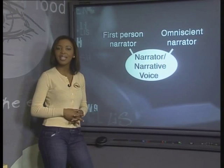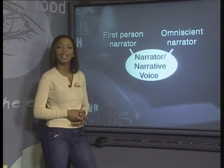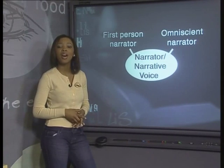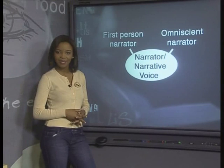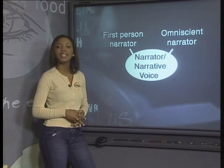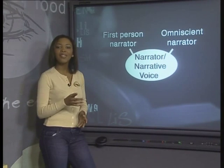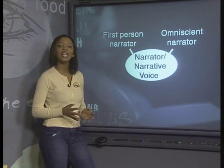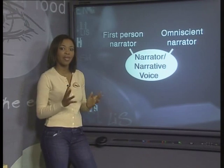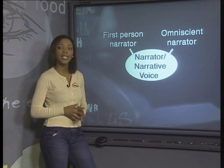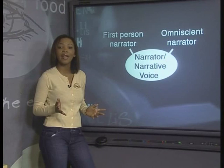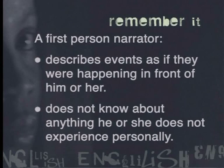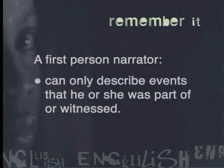The narrator can describe his or her own thoughts or feelings about what is happening, but has no way of climbing into the heads of the other characters and describing what they are thinking or feeling. The narrator can also only describe events that he or she witnessed or was part of. If the narrator was not there for something, he or she cannot tell the reader about it, because a first person narrator doesn't know everything. There can be an interesting turn of events where suddenly something happens that no one expected, or another character acts in an unexpected way.